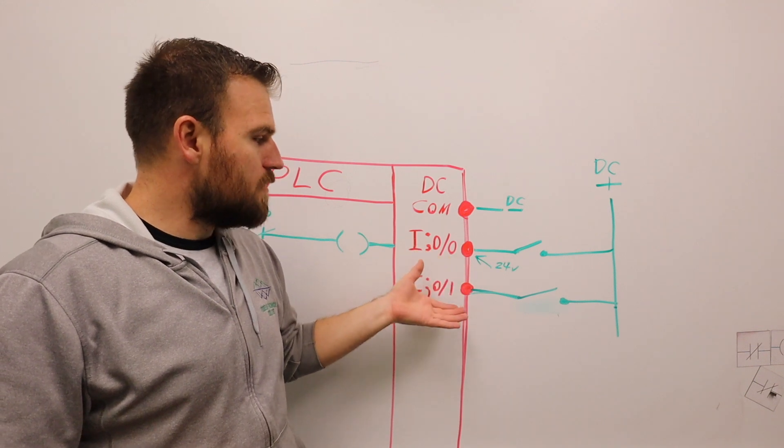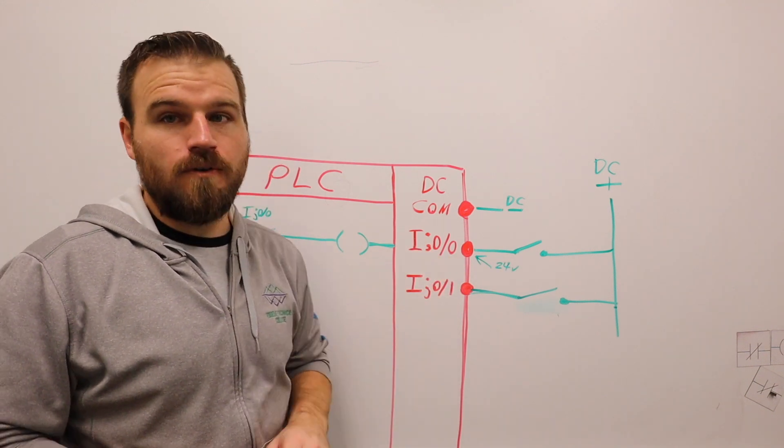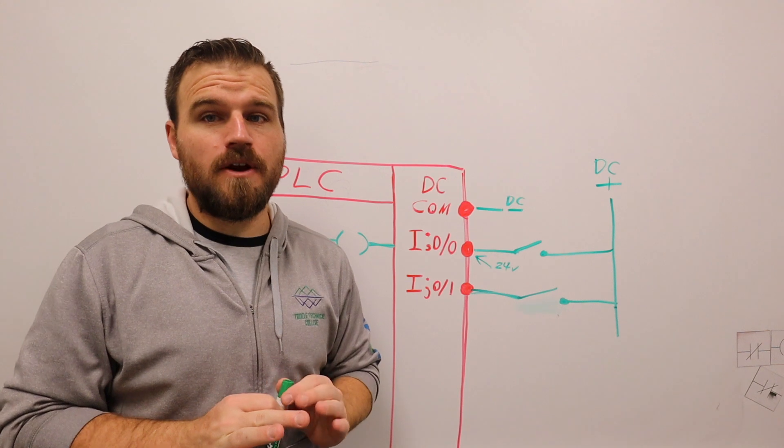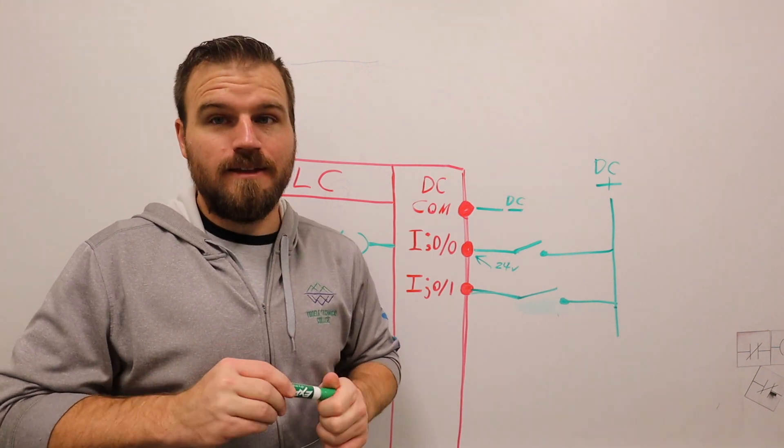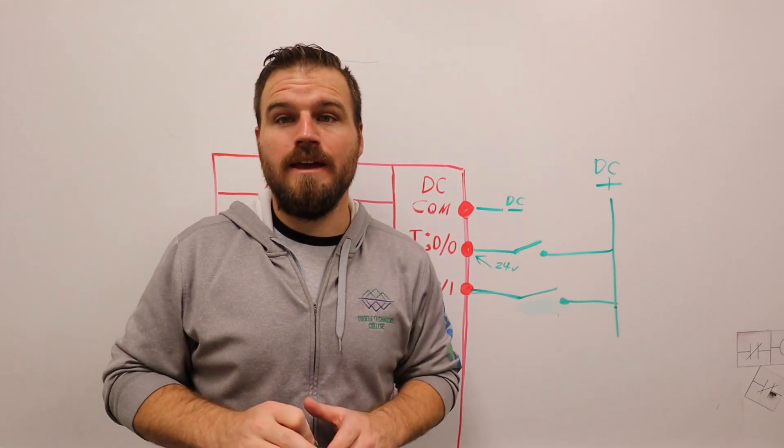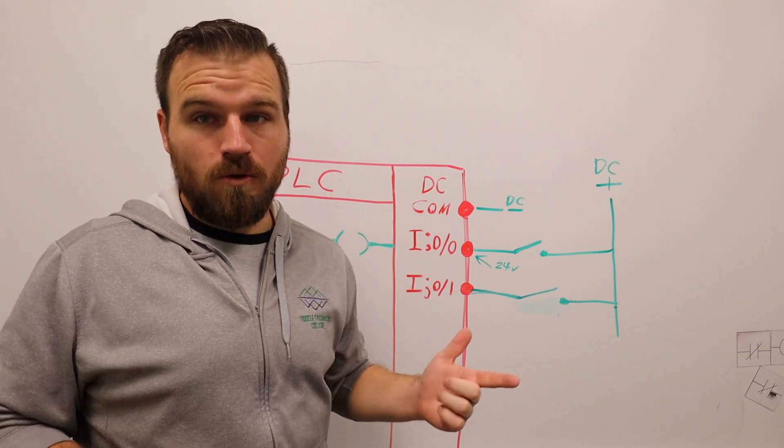So this is pretty much it. We're going to apply negative power to our DC common, and we're just going to control whether or not these terminals have 24 volts.